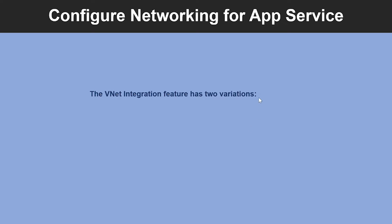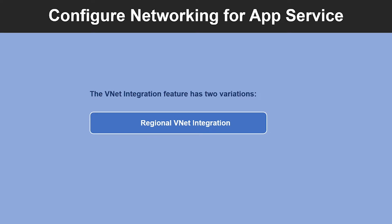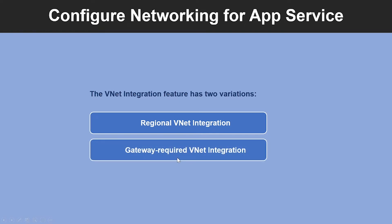The next thing we need to understand is how to configure networking for your app service. The VNet integration feature is used in multi-tenant apps. If the apps are in an App Service environment, they are already in a VNet and don't require VNet integration to reach resources in the same VNet. There are two variations: regional VNet integration and gateway required VNet integration. For regional VNet integration, when you connect to Azure Resource Manager virtual networks in the same region, you must have a dedicated subnet in the VNet you are integrating with. For gateway required VNet integration, when you connect to a VNet in another region or to a classic virtual network in the same region, you need an Azure virtual network gateway provisioned in the target VNet.